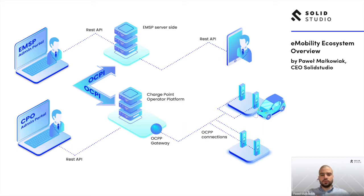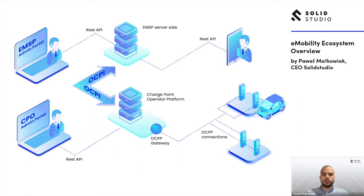One disclaimer: today I'm not going to cover more advanced subjects like e-roaming hubs. I'm going to present two basic digital products that you can build on your own, build with a software provider, or buy as an off-the-shelf solution either on a SaaS or license basis. We'll cover roaming a little bit, but more like peer-to-peer, for the sake of linking those products together.